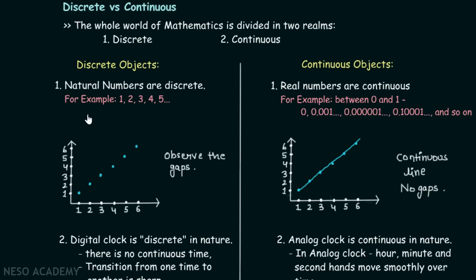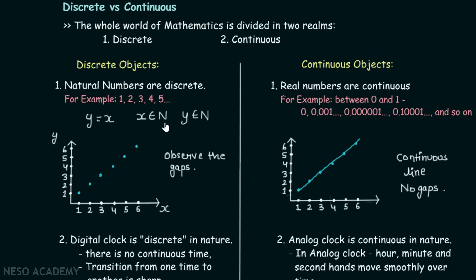Suppose I ask you to draw a graph for y equals x, where x belongs to natural numbers and y belongs to natural numbers. This is how the graph will look like — you can observe distinct points. When y is 1, x is 1; when y is 2, x is 2; when y is 3, x is 3; and so on. Please observe the gaps in between. Discrete means distinct or not connected; we are not getting a continuous line, only distinct points which are not connected with each other. Therefore, this graph is a discrete graph.